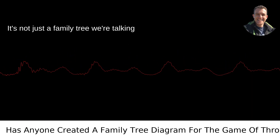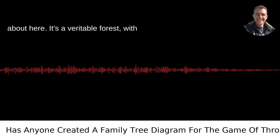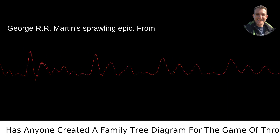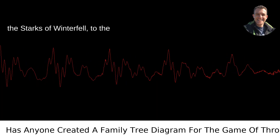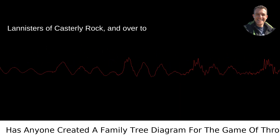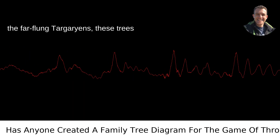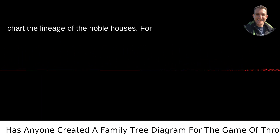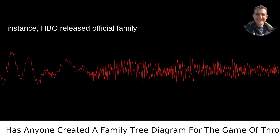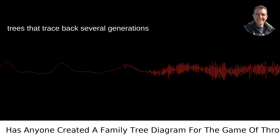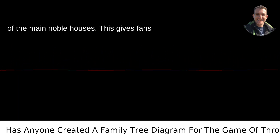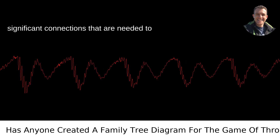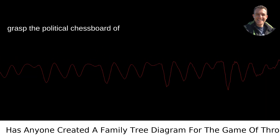It's not just a family tree we're talking about here. It's a veritable forest, with roots that dig deep into the rich soil of George R.R. Martin's sprawling epic. From the Starks of Winterfell, to the Lannisters of Casterly Rock, and over to the far-flung Targaryens, these trees chart the lineage of the noble houses. HBO released official family trees that trace back several generations of the main noble houses, giving fans an excellent overview of the most significant connections needed to grasp the political chessboard of Westeros.